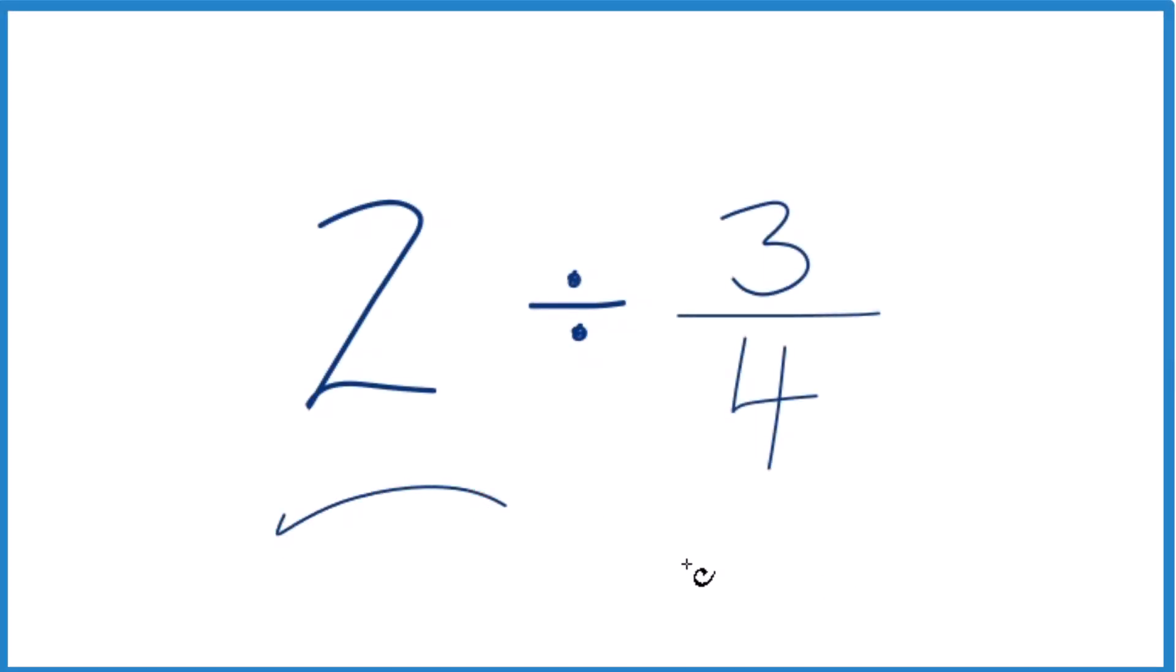Let's divide 2 by 3 fourths. And here's how you can do that. So probably the easiest thing to do is to think of 2 as 2 over 1, because that gives us the start of a fraction.